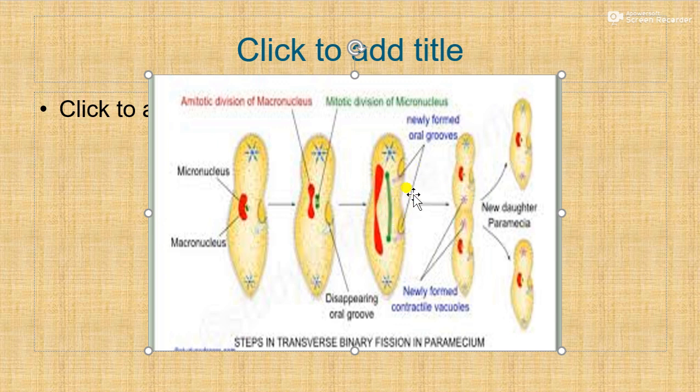Two oral grooves now begin to form - one in the anterior half and another in the posterior half. There is development of two to four contractile vacuoles near the middle part of the body as future contractile vacuoles of the daughter paramecia. Two original contractile vacuoles remain in each half of the dividing parent.